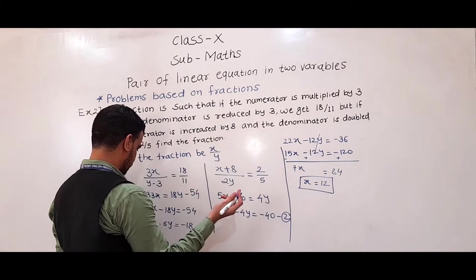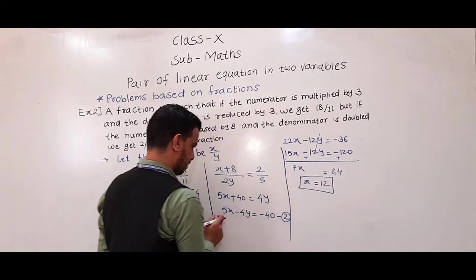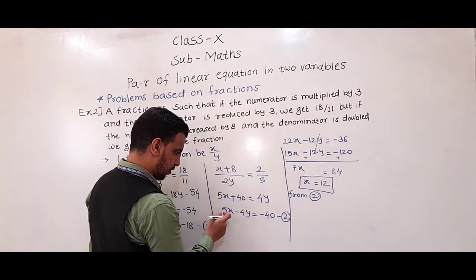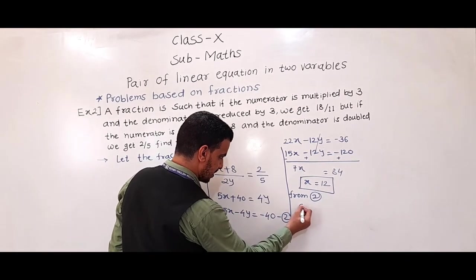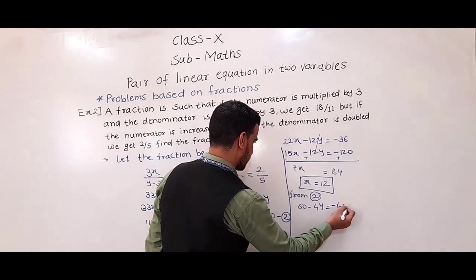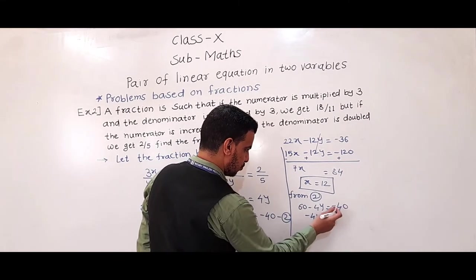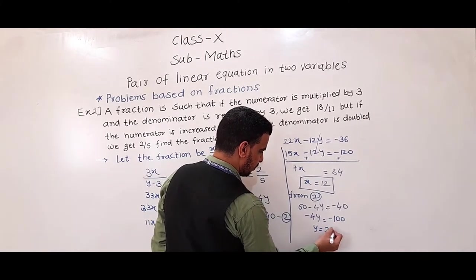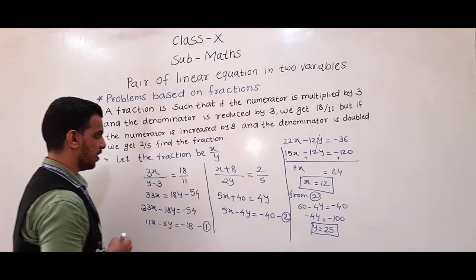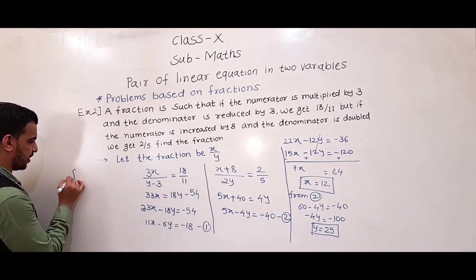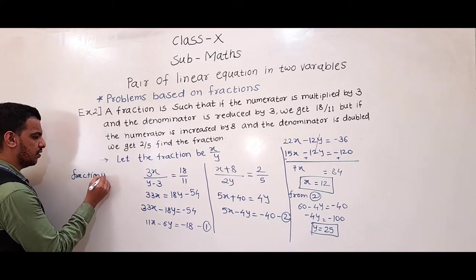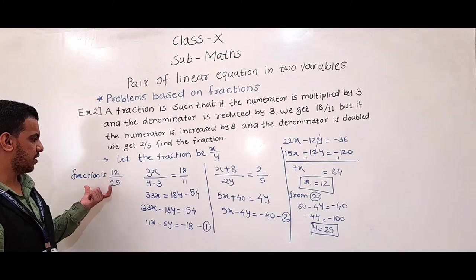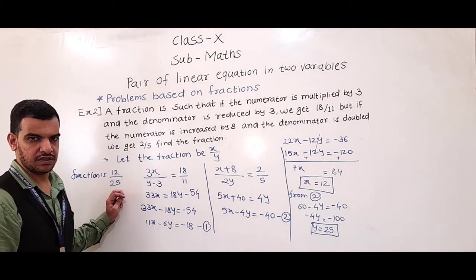Now, putting x = 12 into equation 2: 5 × 12 − 4y = −40, so 60 − 4y = −40, so −4y = −40 − 60 = −100, so y = 25. Therefore x = 12, y = 25, and the required fraction is 12 by 25.